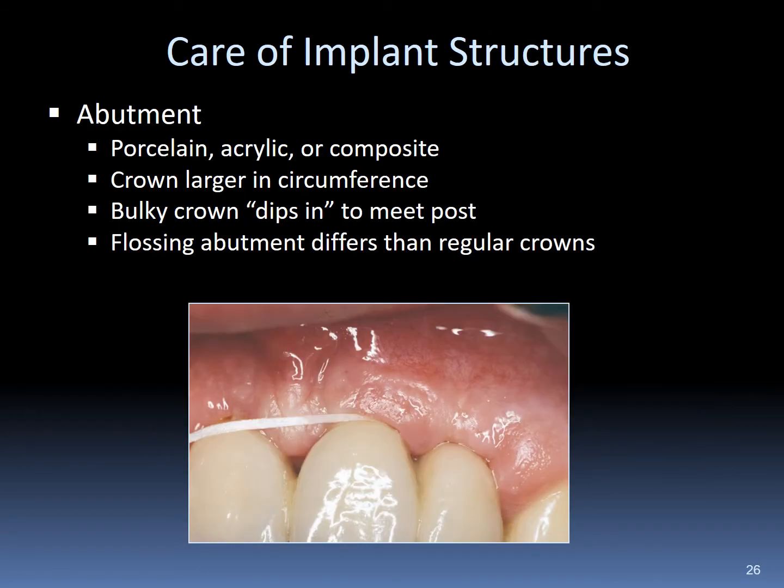In care of the implant structure, the abutment should be flossed regularly. Abutments may be constructed of porcelain, acrylic, or composite materials. The crown circumference may be bulky, or the margins will extend to meet the post support of the implant. The flossing technique is similar to regular crowns and dentition; however, the physical appearance and shape of the implant may differ. Specific instructions for successful implant flossing techniques and recommendations are necessary for patients.